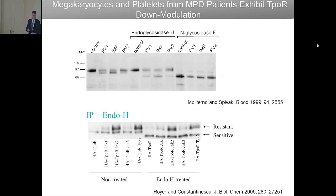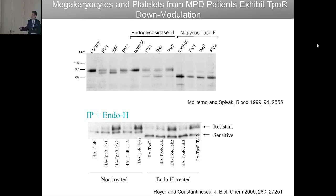The complex of JAKs with receptors is much more stable. When we got this result, we remembered that in 1999, Professor Jerry Spivak at Johns Hopkins had reported that polycythemia vera and fibrosis patients have a defect in the stability of the thrombopoietin receptor — this receptor was in diminished amounts in platelets and was immature. Since JAK2 was the main JAK involved in signaling, our group postulated that a defect in JAK2 must be involved in these diseases.